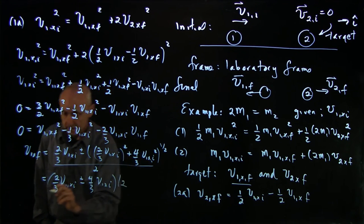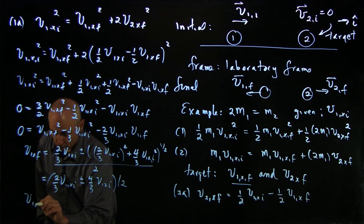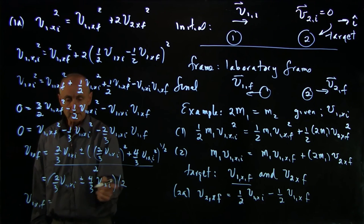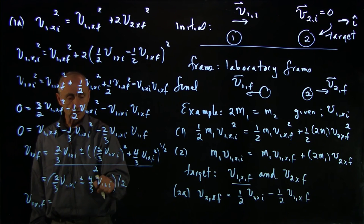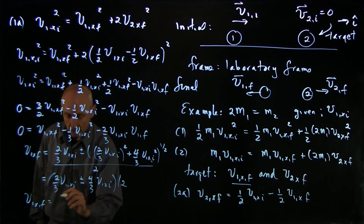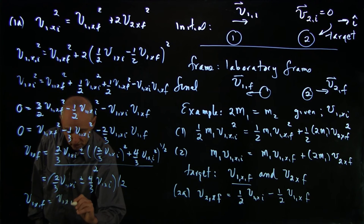We see that there are two different roots. So when you add them, you get 2 v1x initial divided by 2. So there's one solution.